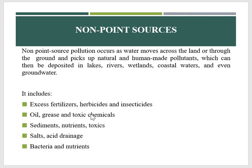Another category is oil, grease, and toxic chemicals from urban runoff — where runoff is excess rainfall — and also from energy production. Sediments from poorly managed construction sites, croplands, and forest lands are also a source. Nutrients including nitrogen and phosphorus can degrade water quality by contaminating drinking water supplies.